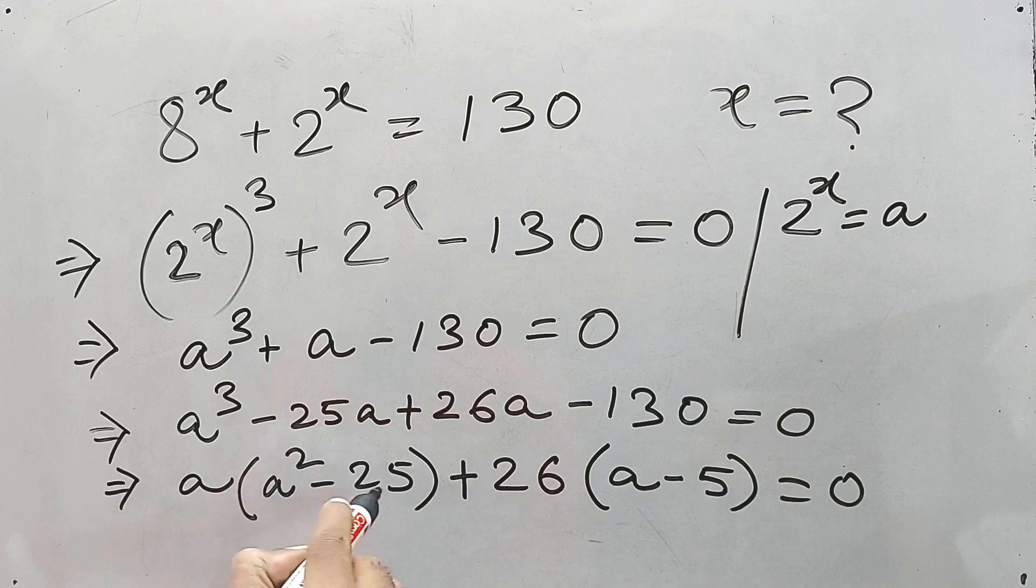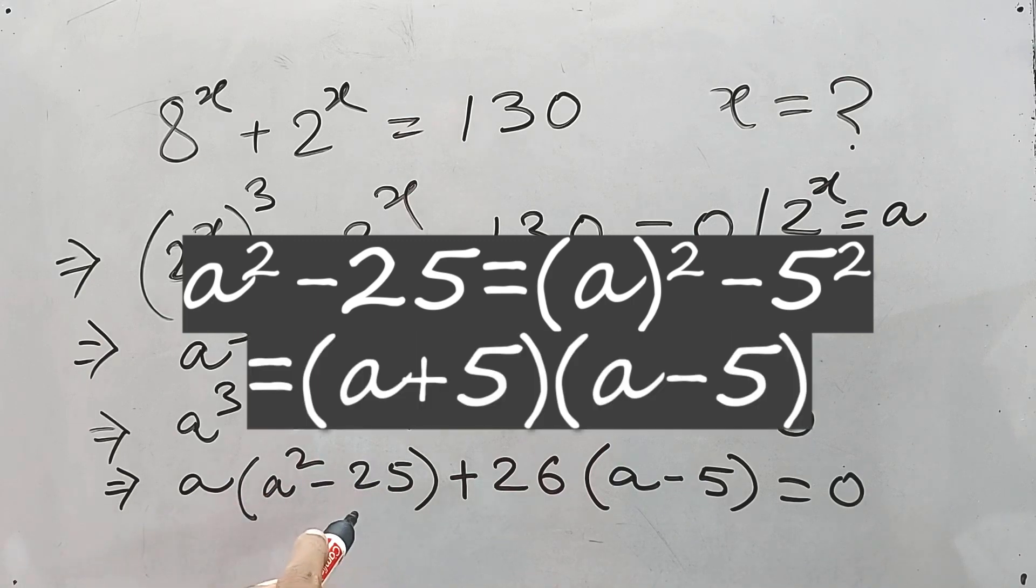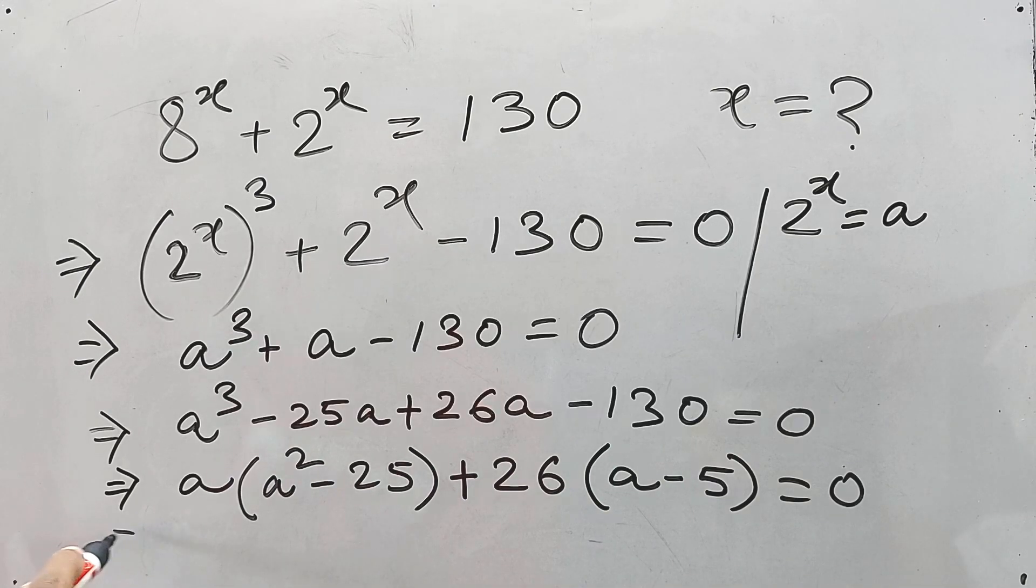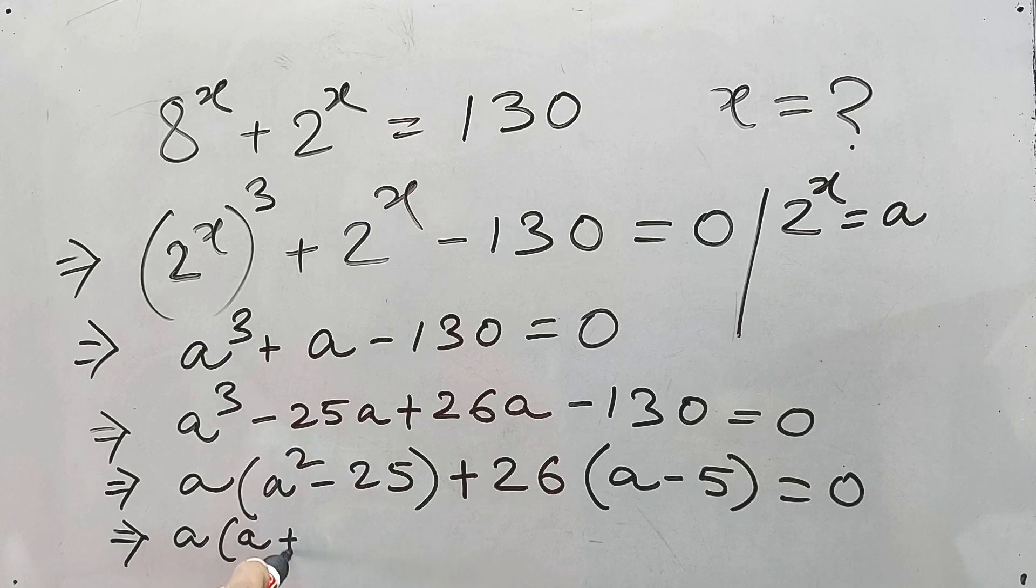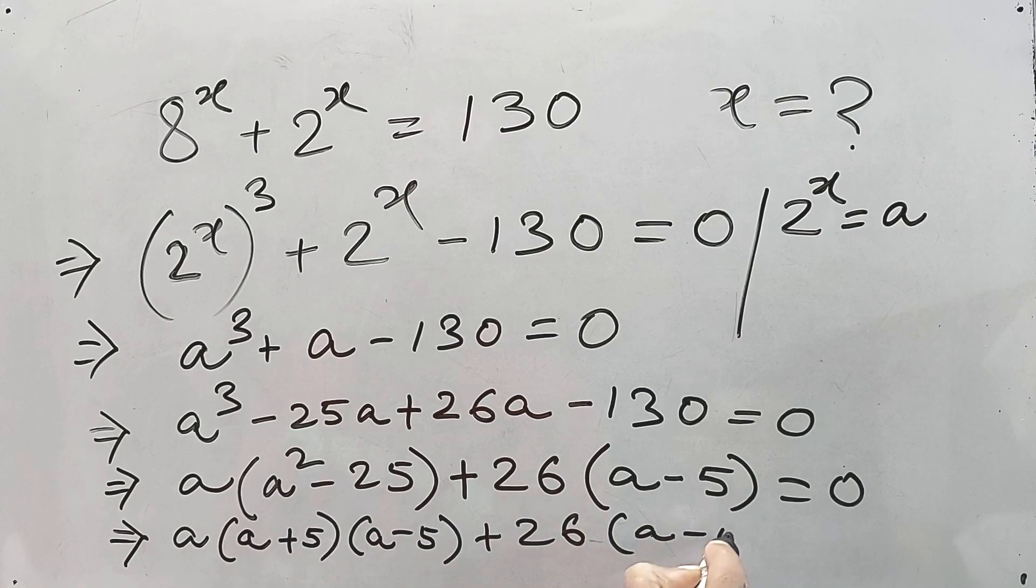Now what is this? a square minus b square, 5 square, right? 5 square. So a plus 5 into a minus 5, right? We know this. So definitely we can write like a into, sorry for the writing, a plus 5 into a minus 5, plus 26 into a minus 5 is equal to 0.